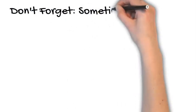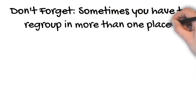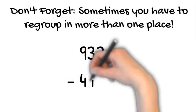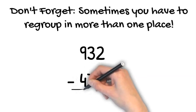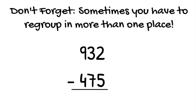You did subtraction with regrouping. But before you go, I want to remind you. Don't forget, sometimes you might need to regroup in more than one place. Like in this problem. 932 take away 475. Now let's start in the ones place. 2 take away 5. That's more on the floor. So we go next door.